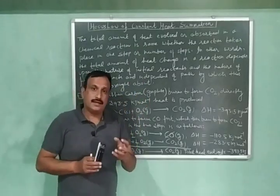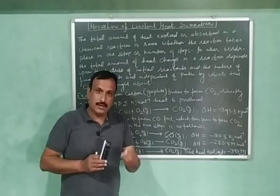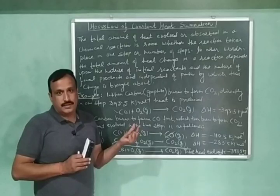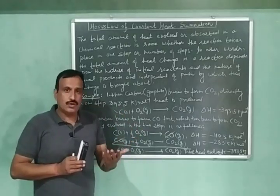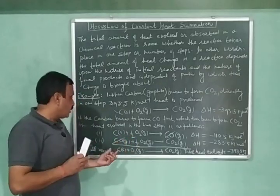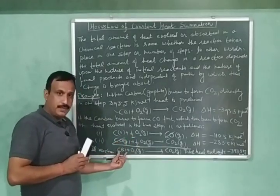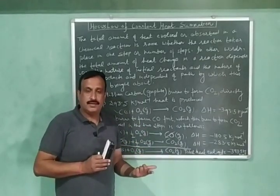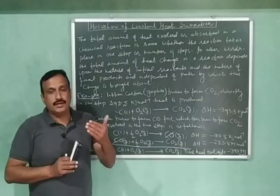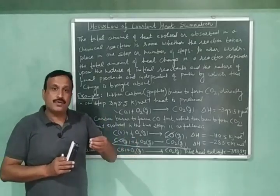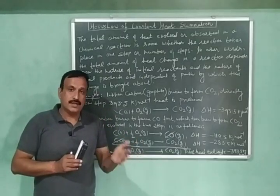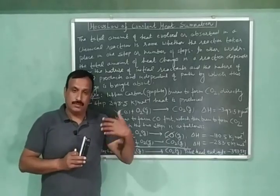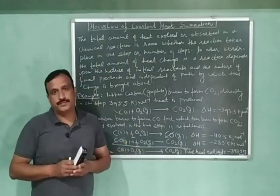And we can also say here that the amount of heat released depends upon the initial state of reactants, that is the nature of initial reactant. Because in both the cases, the initial reactants are carbon and oxygen. And the final products are carbon dioxide. So we can conclude here that the total heat change during chemical reaction depends upon the initial state of the reactants and the final state of the product. And it doesn't depend upon the path or the manner by which that change has been brought about.